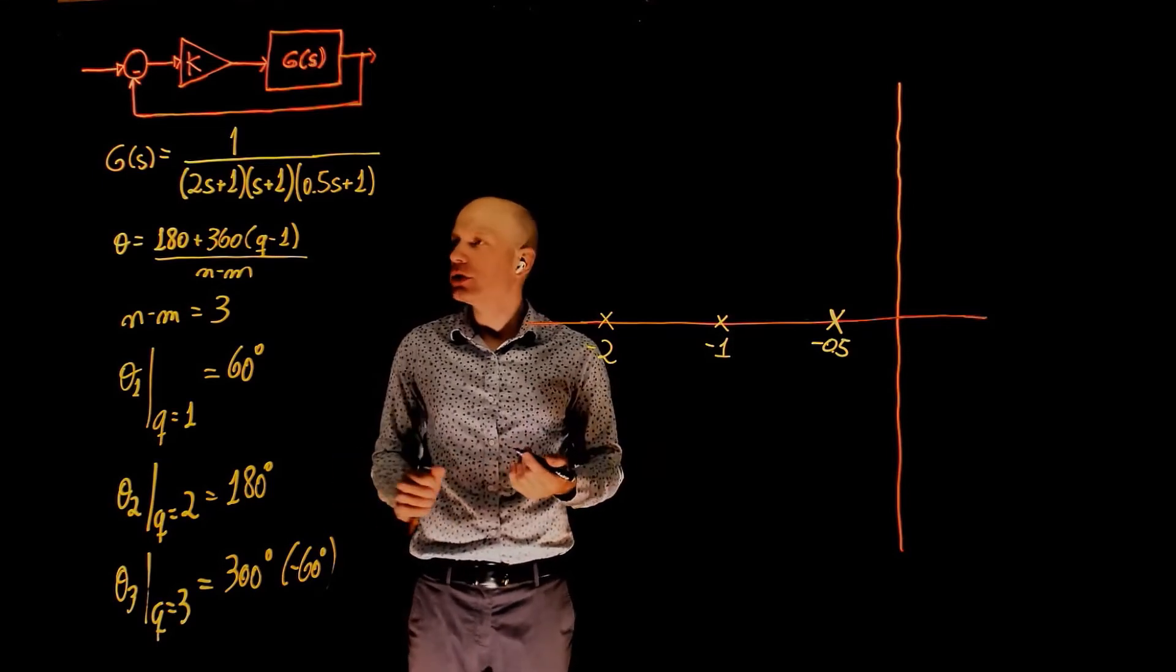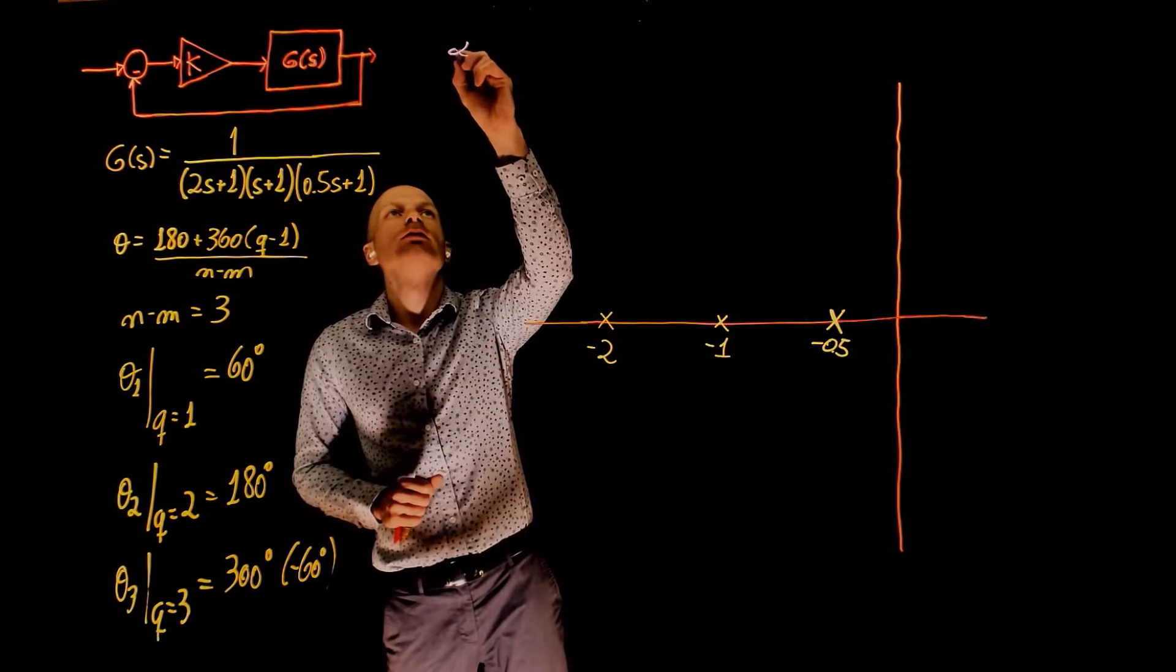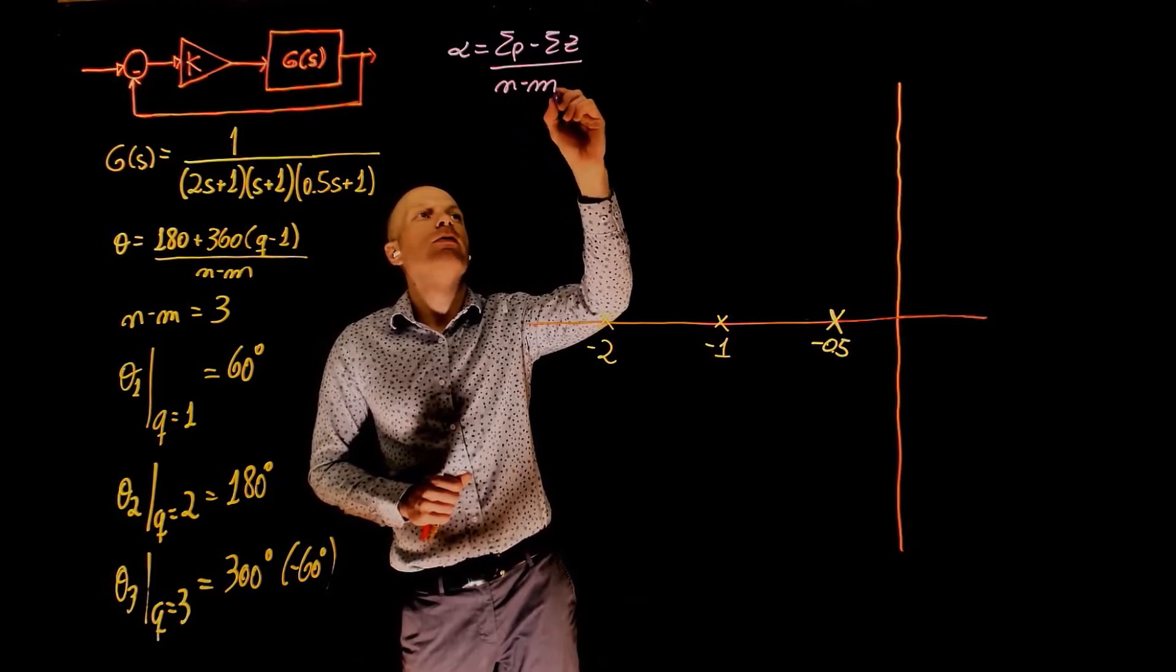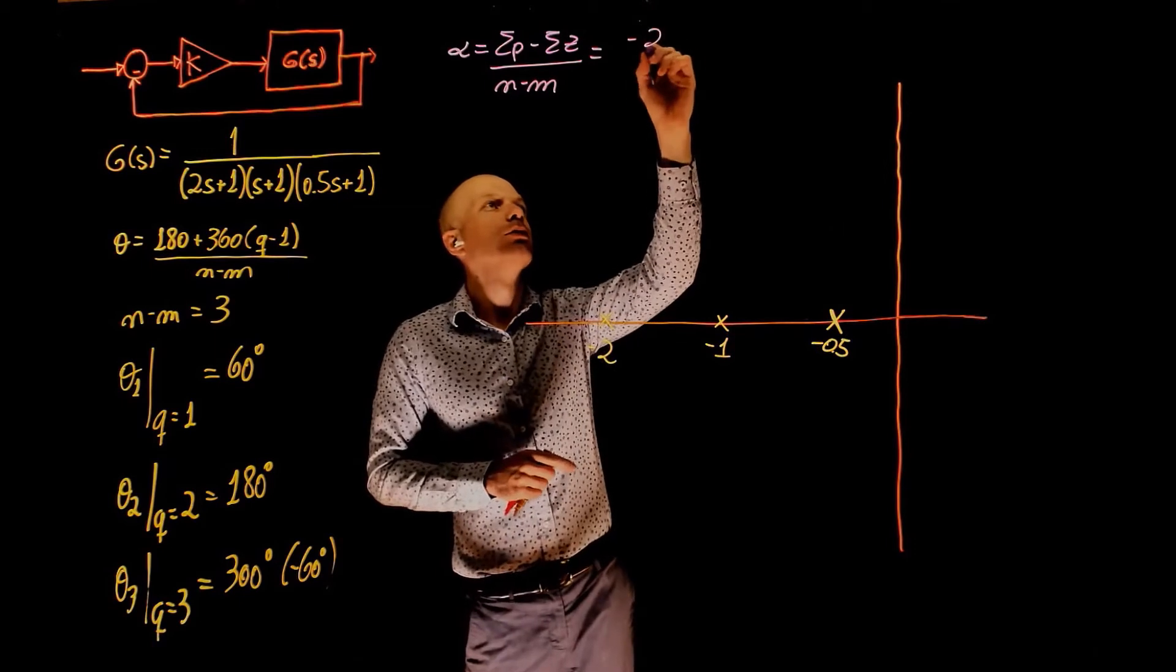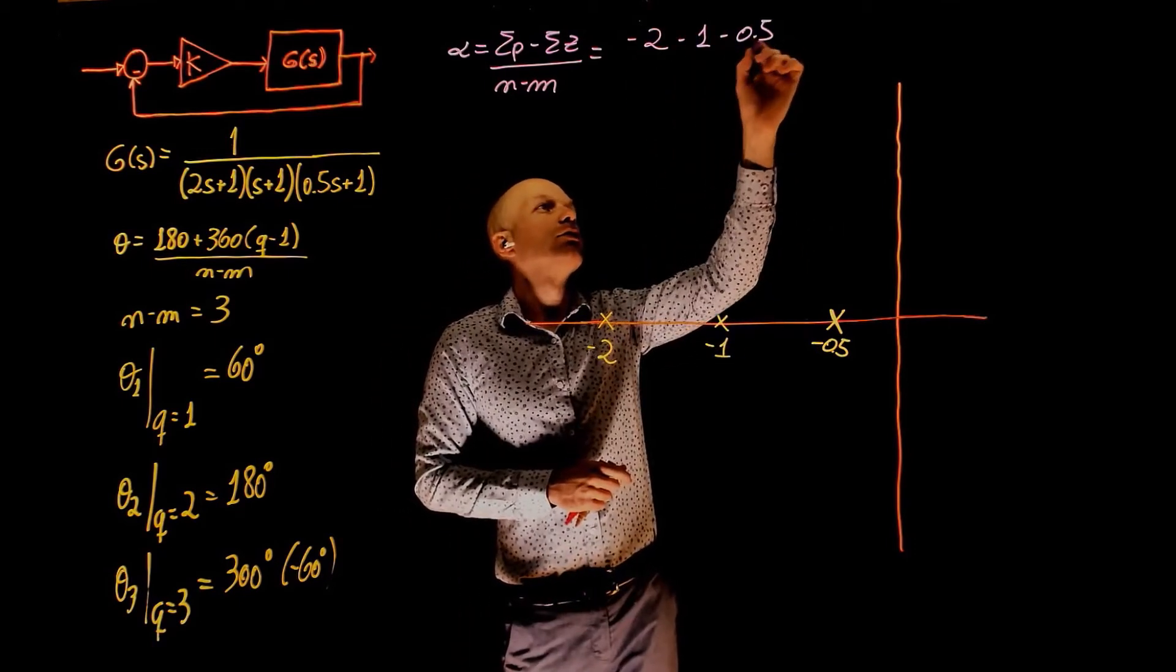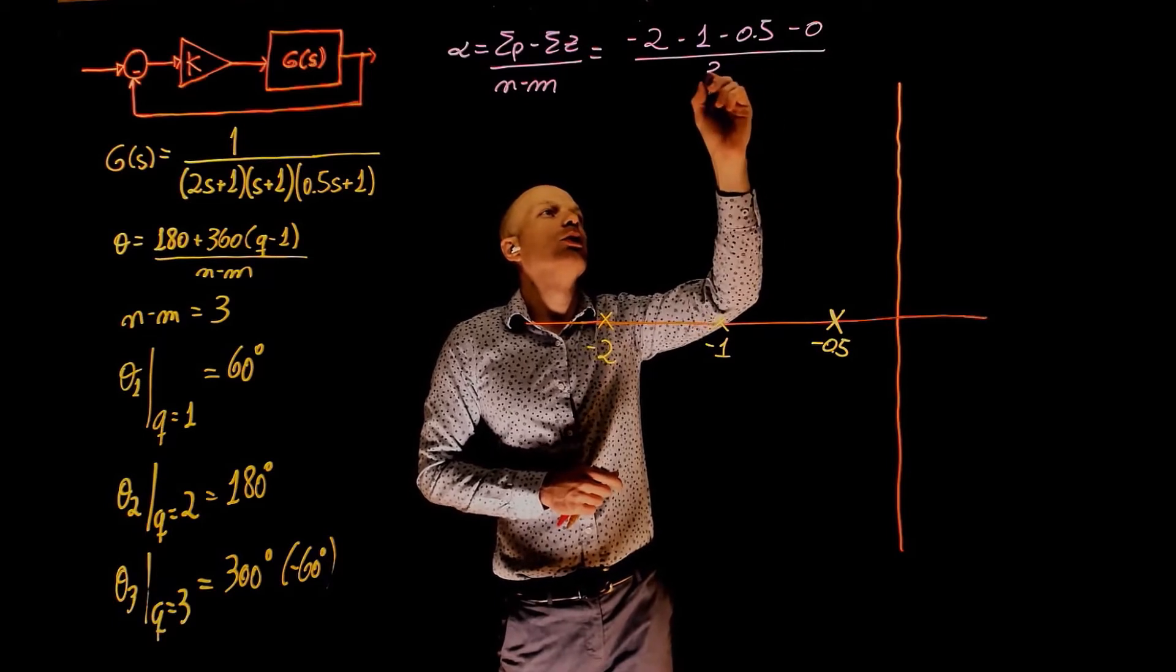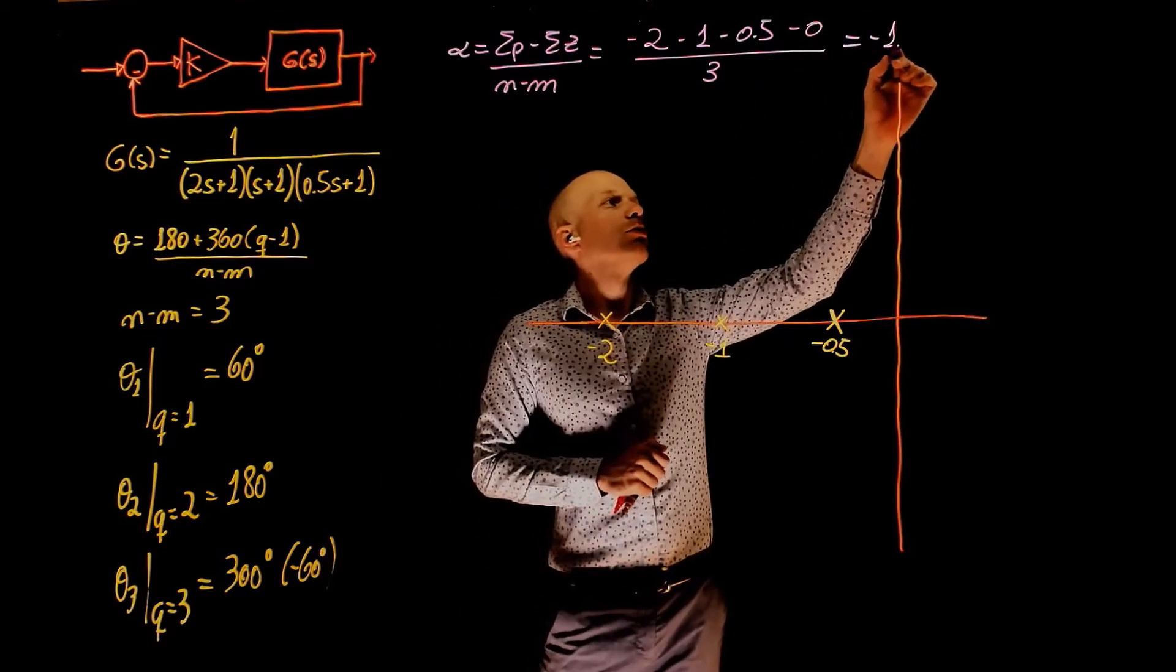Let's calculate now the centroid of these asymptotes. The centroid, called alpha, is the sum of poles minus the sum of zeros divided by n minus m. And this is, for the poles, we have negative 2, negative 1, negative 0.5, plus minus 0 for the zeros, divided by 3. And this is negative 1.16.